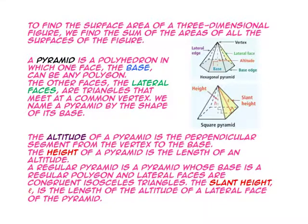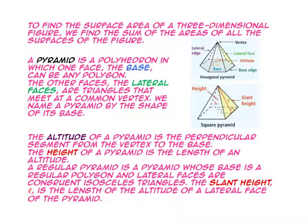This pyramid has a base that is a hexagon, so it is a hexagonal pyramid. This pyramid has a base that is a square, so it is a square pyramid. The altitude of a pyramid is the perpendicular segment from the vertex to the base. The height of a pyramid is the length of the altitude. A regular pyramid is a pyramid whose base is a regular polygon and whose lateral faces are congruent isosceles triangles.